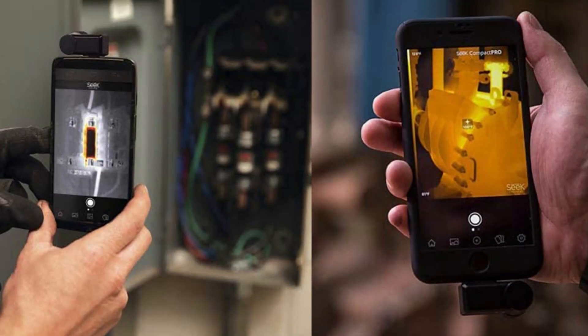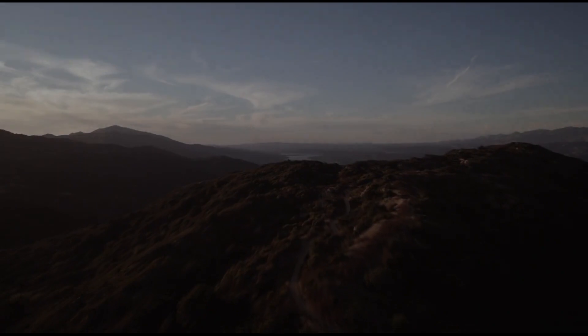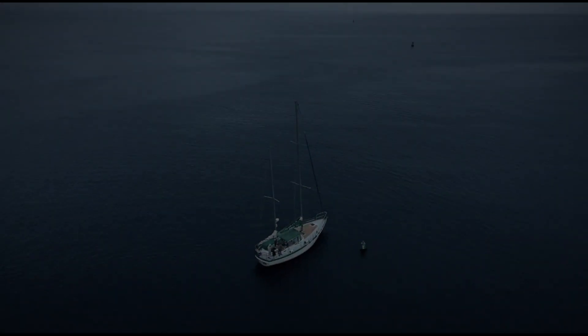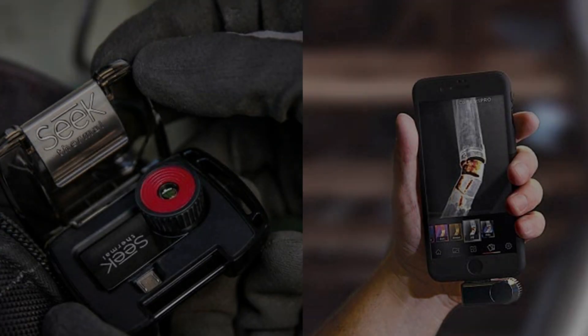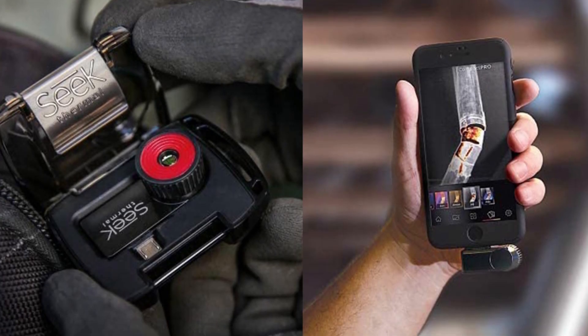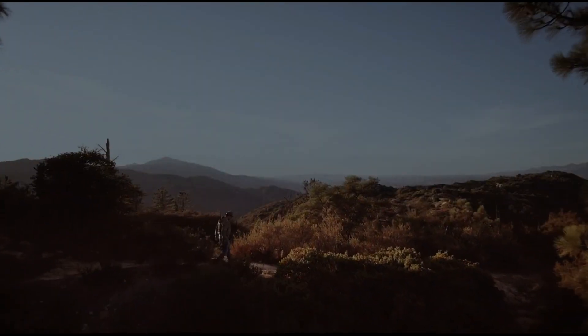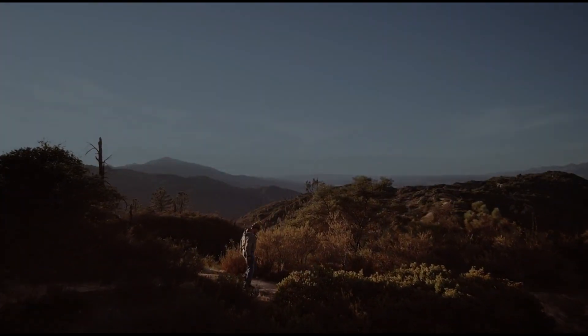Key features: 320x240 thermal sensor, detection range from minus 40°F to 626°F, 32° field of view, focusable lens, 9 color palettes, 9 Hz frame rate, 1,800 foot view distance. The Seek Thermal Compact Pro offers a full thermal camera resolution of 320x240 pixels. As you can see, this one's higher than the Floor One Pro.